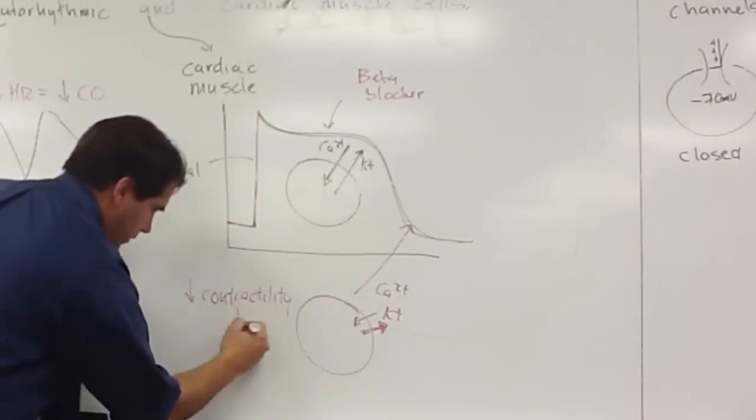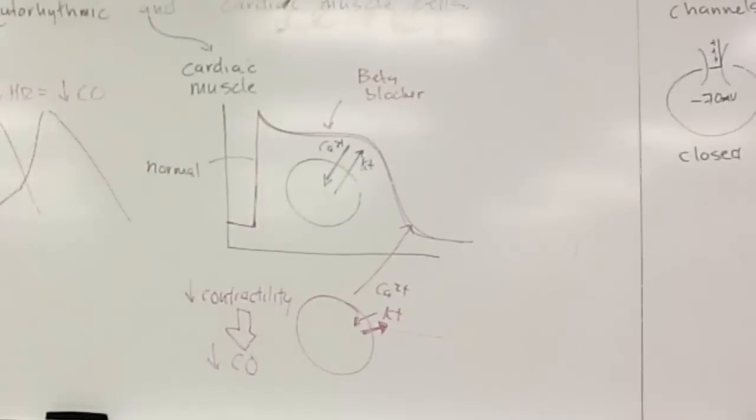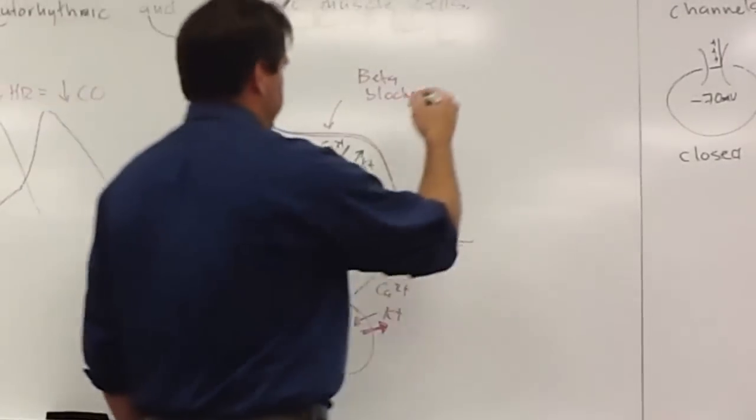Which will decrease cardiac output. So again, if you wanted to use words instead of pictures, you would say something like beta-blockers block potassium channels in cardiac muscle.